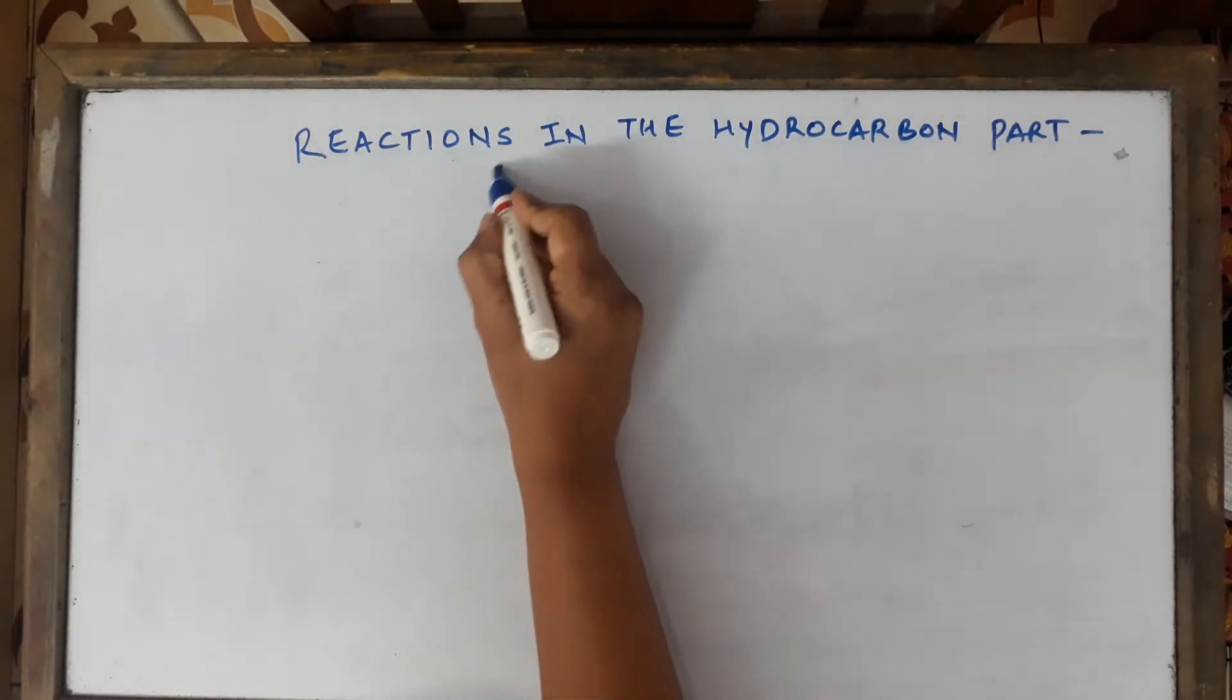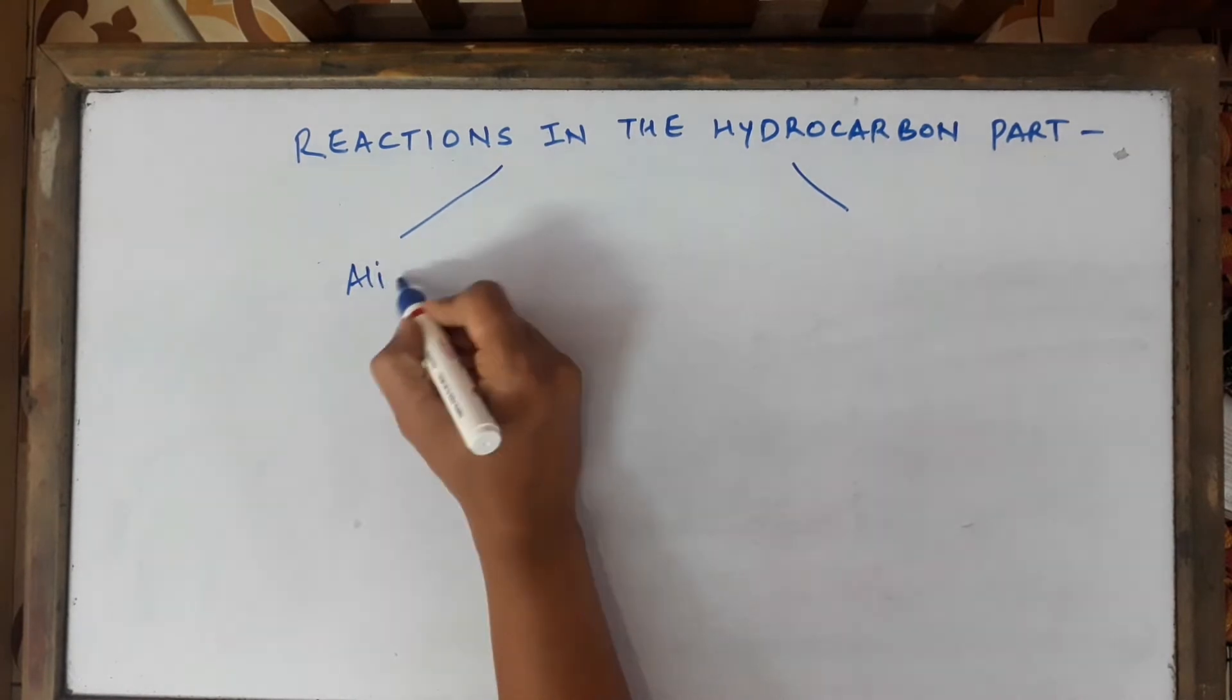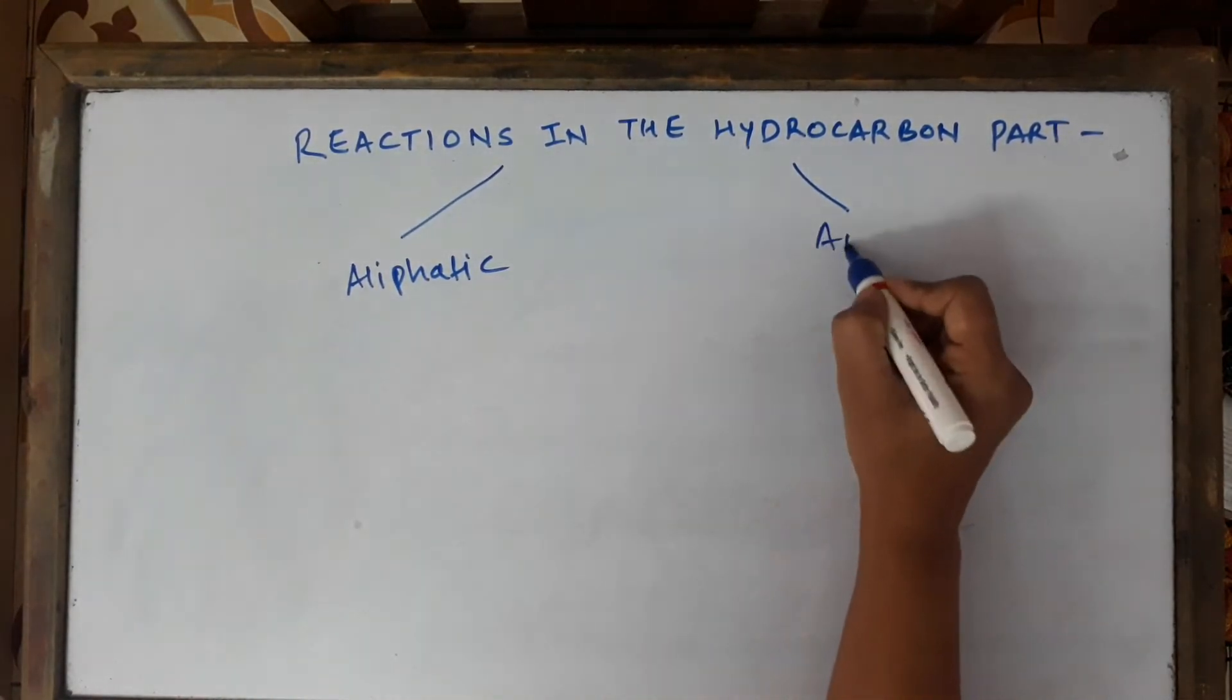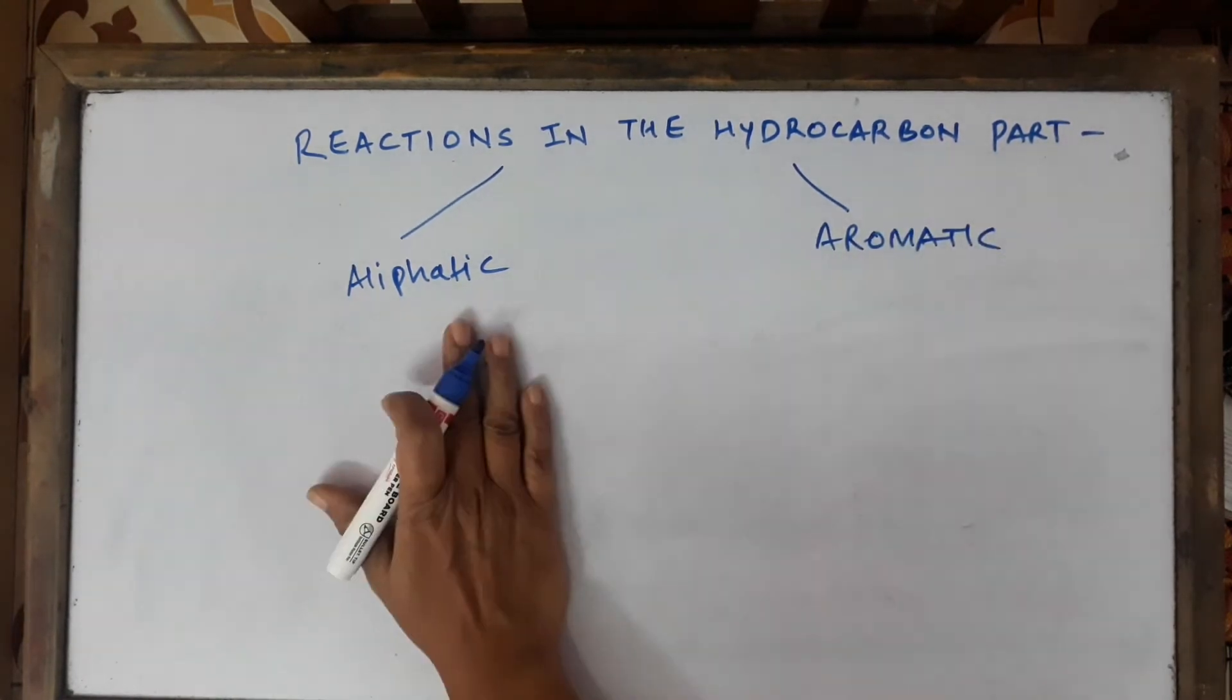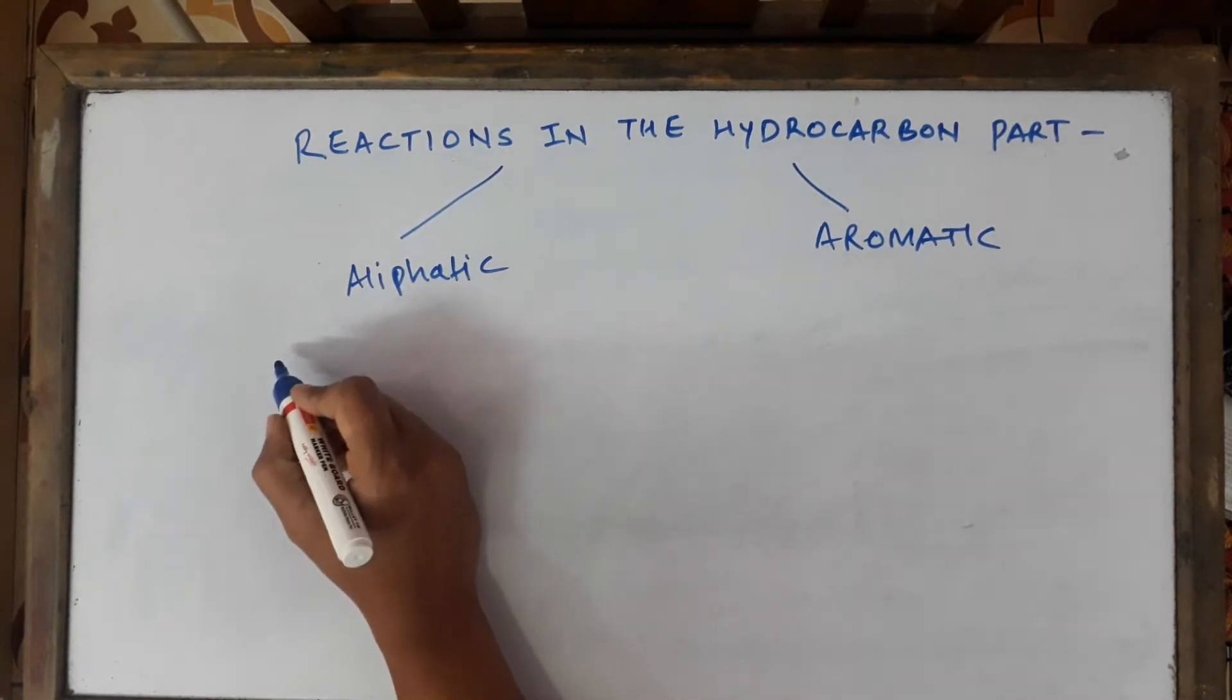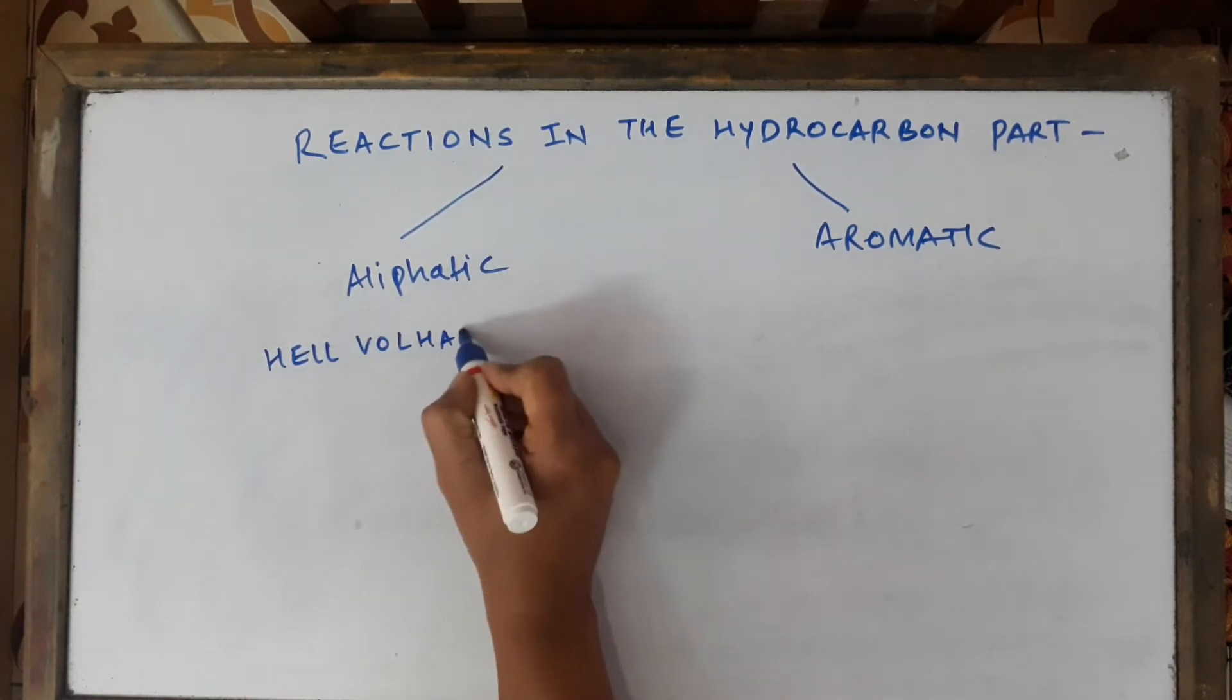Here we have to study two types of compounds: aliphatic carboxylic acids and aromatic carboxylic acids. First, let's talk about aliphatic carboxylic acids. There's one reaction which you have to study in this, which is called the Hell-Volhard-Zelinsky reaction, named after a scientist.